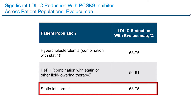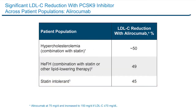Statin-intolerant patients wind up being at very high risk because they can't get the foundation of our lipid-lowering therapy, and so they typically have very high LDL cholesterol levels. It turns out the PCSK9 inhibitors are very well tolerated in this population and very effective, reducing LDL cholesterol by about 60% to 75% depending on the study. Those numbers are for evolocumab. Alirocumab gives very similar results, though in some trials patients started with a half dose and were titrated up, giving reductions more in the 50% range. At full doses, the two drugs are indeed quite comparable.